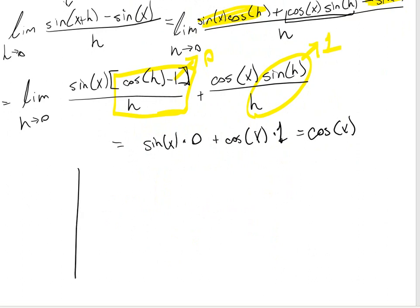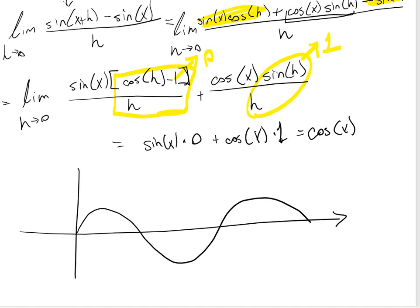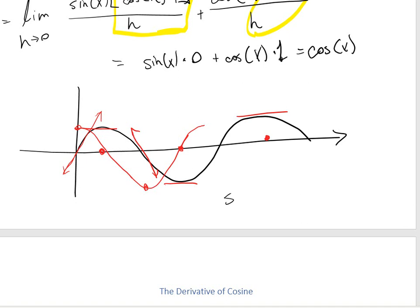Here is another way we could have deduced that. If we graph sine — it looks like this — and I graph its tangent line, at the peaks and valleys I know I'm going to have a slope of 0. So the derivative hits the x-axis at those points. At the peak in between the curves I'll have a slope of 1, and at the opposite peak a slope of negative 1. Continuing that pattern, the derivative gives me the graph of cosine. So the derivative of sine of x is cosine of x.